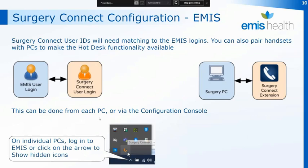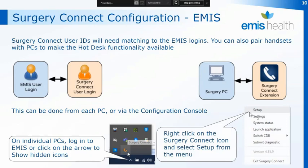On the individual PCs you can either log into EMIS and that will launch the setup, or if EMIS is already running, click on the little arrow down in the bottom right-hand corner next to where your clock is — that will show your hidden icons and SurgeryConnect will be one of the hidden icons until it's actually activated. If you right-click on the SurgeryConnect logo in the hidden icon tray you can then click into Setup from there, or you can just open EMIS and that will run the setup.